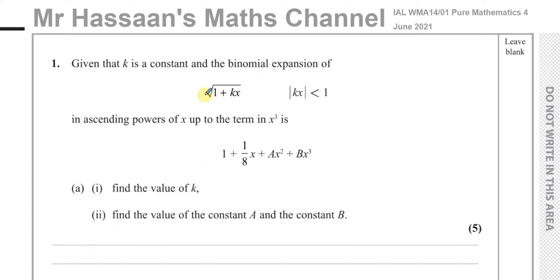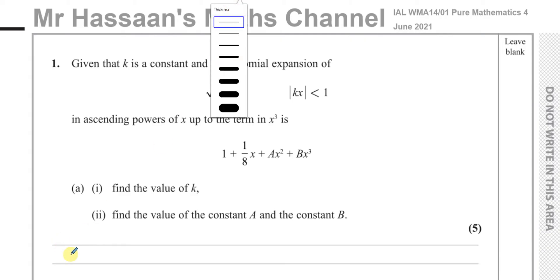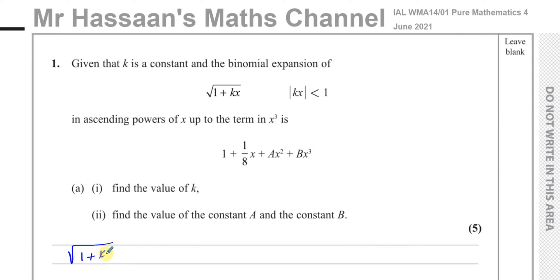The first thing we need to do is to rewrite this in index form. The square root of 1 plus kx is the same as writing 1 plus kx to the power of a half. The square root in surd form is the power of a half in index form. We need to write it in index form because of the binomial expansion we have to do. Now, this is a fractional index — a fractional power.